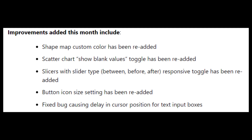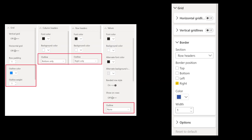There were a few small improvements added this month. The shape map custom color has been re-added, the scatter chart show blank values toggle has been re-added, slicers with slider type responsive toggle has been re-added, the button icon size setting has been re-added, and there was a fix to a bug causing a delay in cursor position for text input boxes.